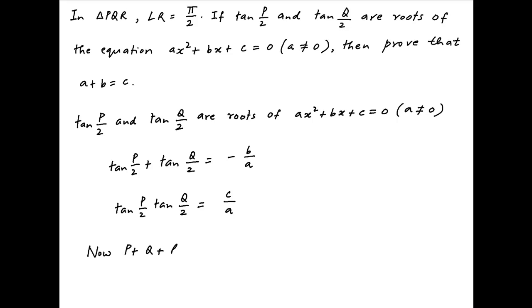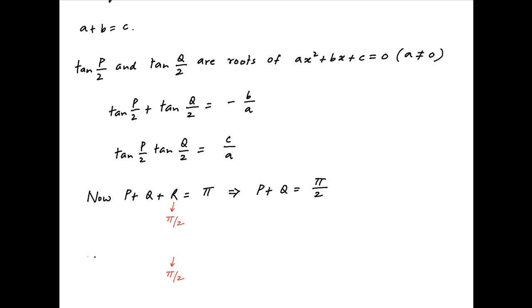Now p, q, and r are angles of a triangle, so p + q + r = 180° (or π). Given that angle r = π/2, the sum of p and q equals π/2. Dividing both sides by 2, we get p/2 + q/2 = π/4.